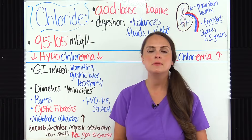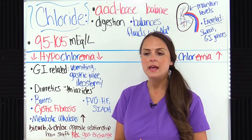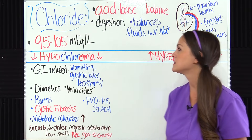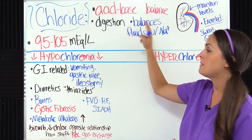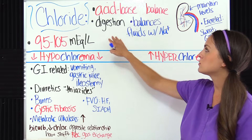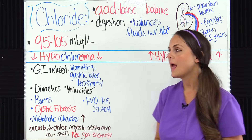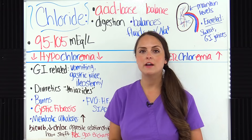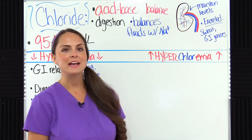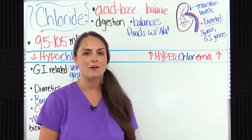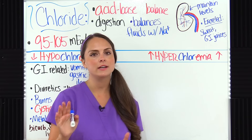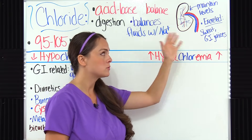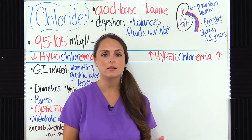Now let's look at the electrolyte chloride. I want to discuss chloride after sodium because these two electrolytes really go together — generally, a loss of sodium means a loss of chloride, and you'll see a lot of overlapping causes and signs and symptoms. Chloride is important for helping maintain our acid-base balance because of its relationship with bicarbonate. It also plays a role in digestion because we need it to make hydrochloric acid, and it helps balance fluids in the body with sodium. A normal level is 95 to 105 milliequivalents per liter.